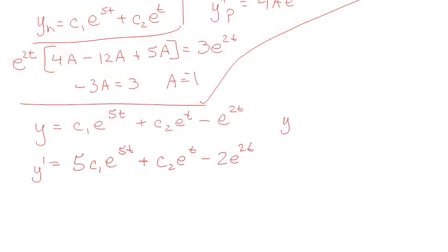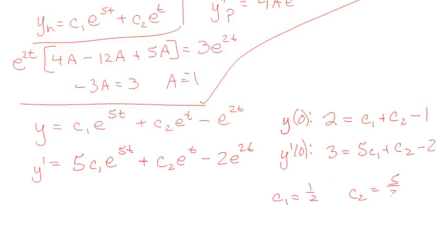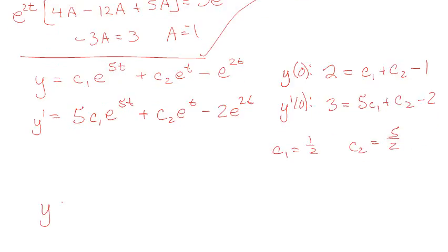And then y at 0 was equal to 2, so that's c1 plus c2 minus 1. And y prime at 0 was 3, and that's 5c1 plus c2 minus 2, which means that c1 is equal to 1/2 and c2 is equal to 5/2. And then I can plug it in and I get an answer that is 1/2, wait, did I do this right? Yes, e to the 5t. Wait, yes. And then 5/2 e to the t minus 2, or nothing, e to the 2t. There we go.